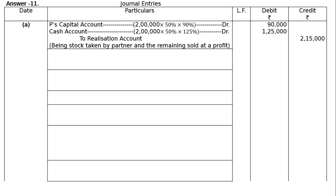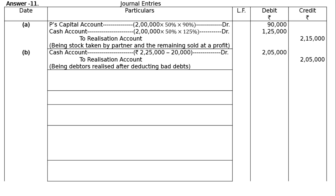Part B: debtors are Rs.2,25,000; provision for doubtful debts Rs.25,000; and Rs.20,000 of book debts proved bad. Debtors has nothing to do with provision for doubtful debts — provision for doubtful debts is transferred to the credit side of Realization account, and debtors to the debit side. Since Rs.20,000 proved bad and could not be recovered, cash account is debited to Realization account Rs.2,05,000, being debtors realized after deducting bad debts.